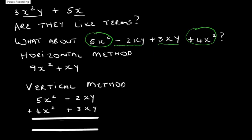The vertical method involves writing the terms down in a column, with like terms below one another. So we have 5x squared and 4x squared, then minus 2xy and plus 3xy, and we add down the columns.